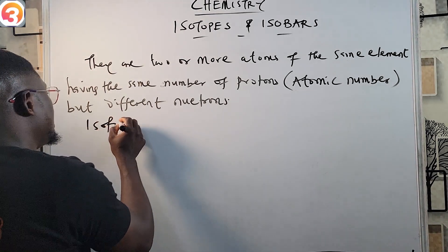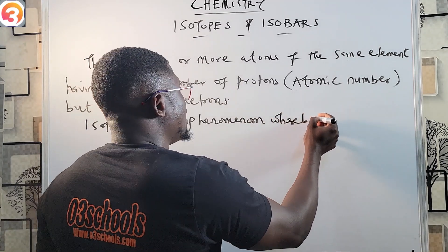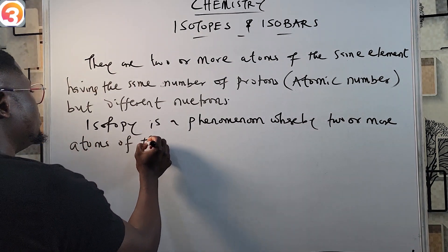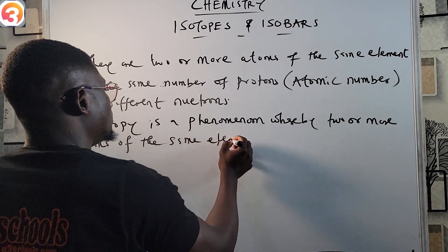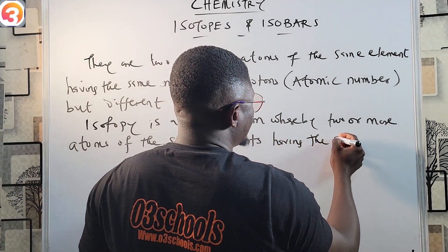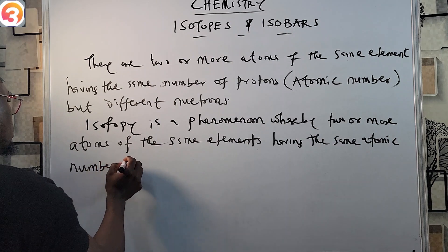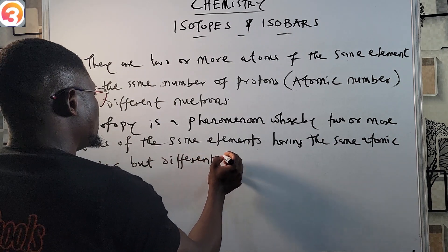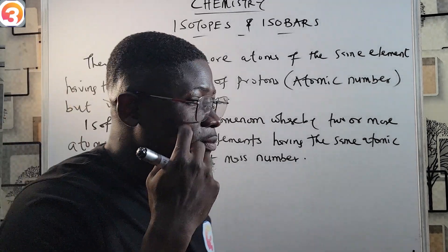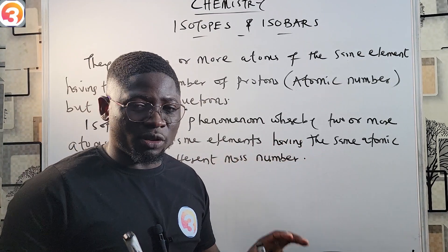In other words, isotopy is a phenomenon whereby two or more atoms of the same element have the same atomic number but different mass number. The atomic weights, atomic mass, mass number, or nuclear number — they are different, but they have the same atomic number.